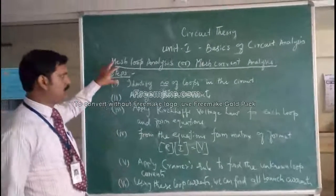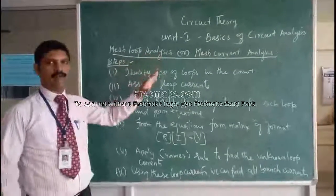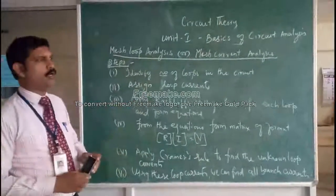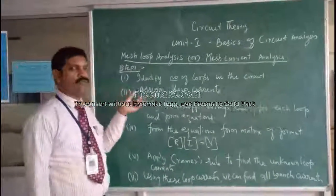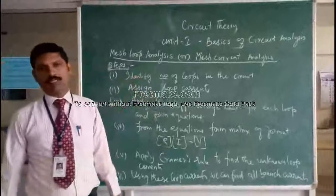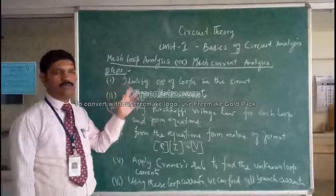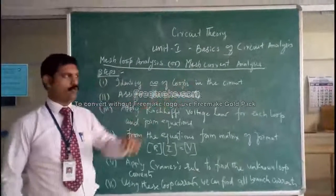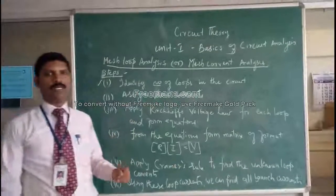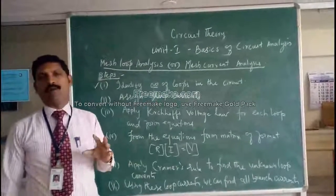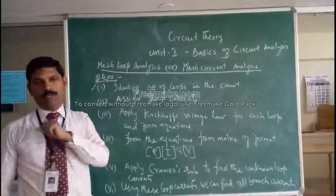This involves several steps, let us see one by one. In mesh loop analysis, whenever you get a circuit, the first thing we have to do is find how many loops are there. Once you find the number of loops, you have to form that many loop equations.